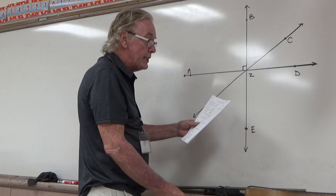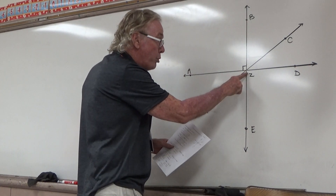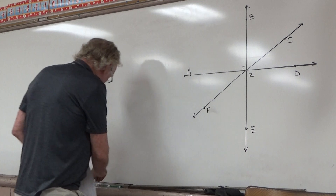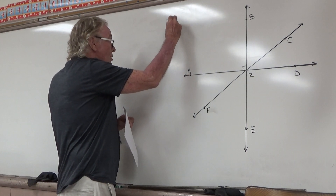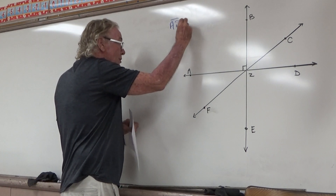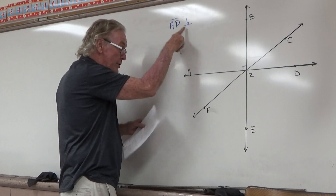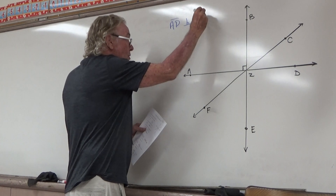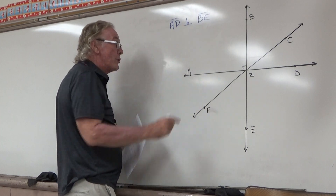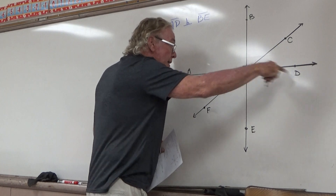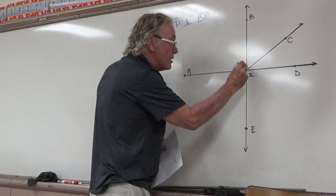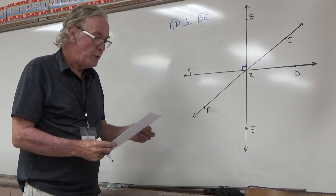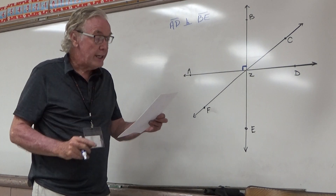It begins by saying segment AD intersects segment BE at point Z. It also notes that AD has this mark — it is perpendicular to BE. Perpendicular means we have a right angle. AD and BE are perpendicular, and that's denoted by that little square corner right there. So we know a couple things about this sketch already.